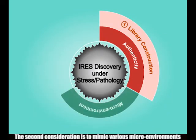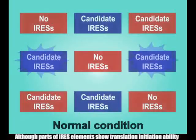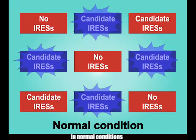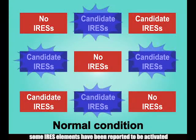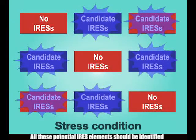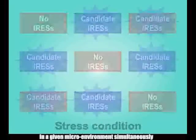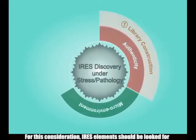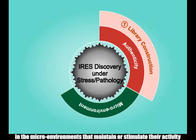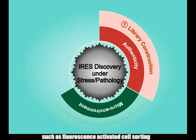The second consideration is to mimic various microenvironments that maintain IRES activity. Although parts of IRES elements show translation initiation ability in normal conditions, some IRES elements have been reported to be activated only in pathology and stress conditions. All these potential IRES elements should be identified in a given microenvironment simultaneously. For this consideration, IRES elements should be looked for in the microenvironments that maintain or stimulate their activity, and systematically identified by a high-throughput technology, such as fluorescence-activated cell sorting.